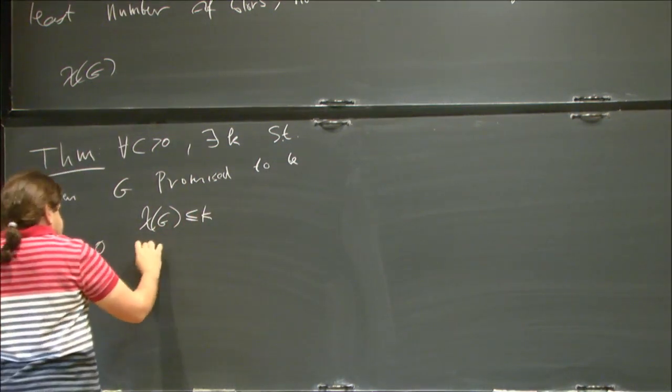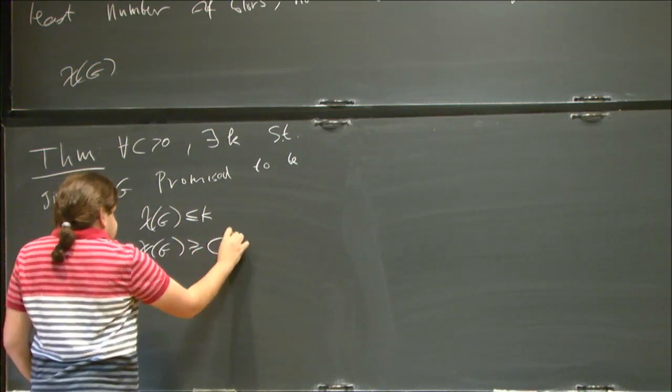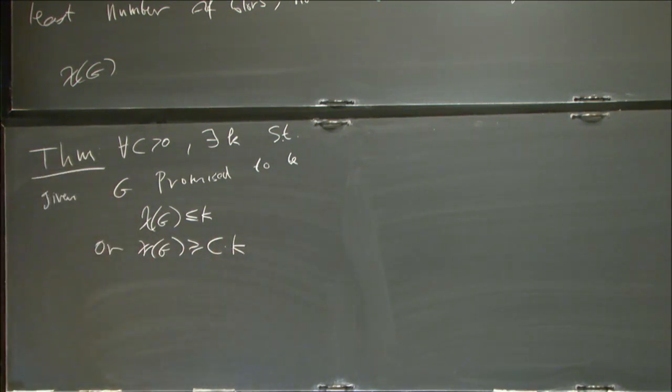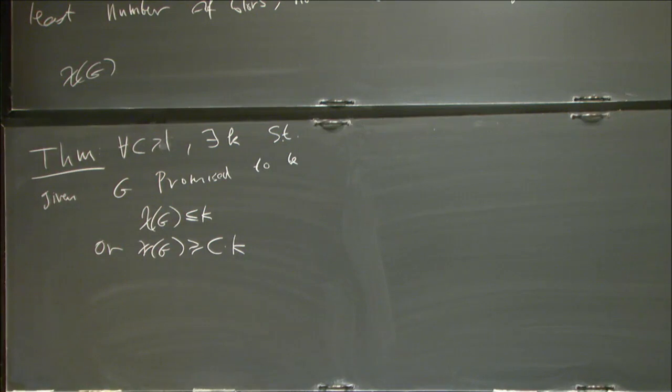or, chromatic number, at least, c times k, then, yeah, sorry. So, this is NP-hard to tell.